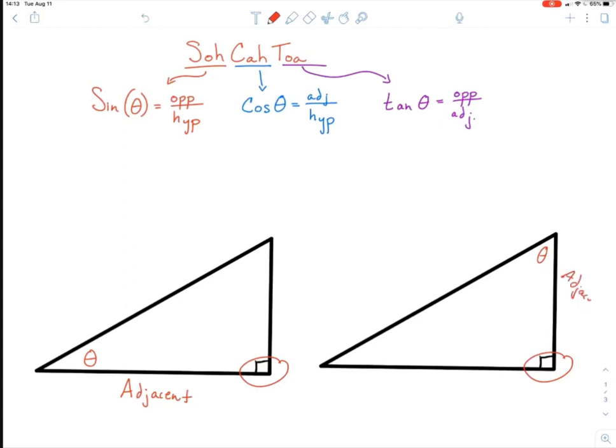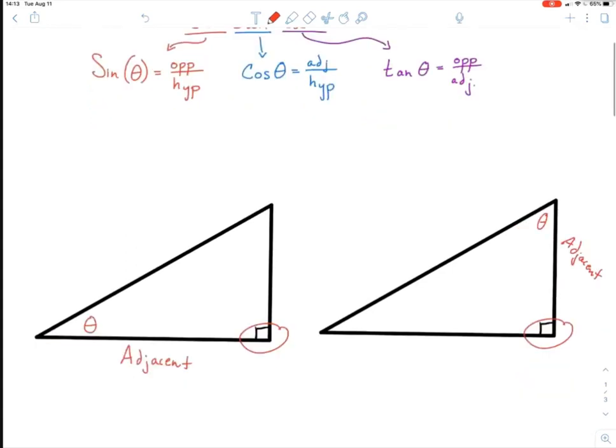Opposite is the side that is on the opposite side. It does not touch the angle theta here at all, so opposite is going to be all the way on the other side. So this is my opposite, and on this triangle over here this side is going to be our opposite.